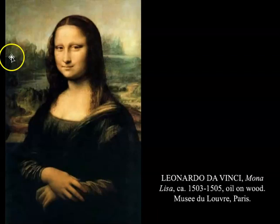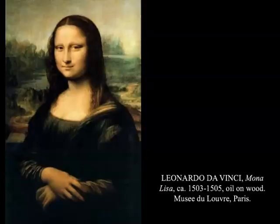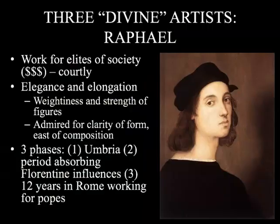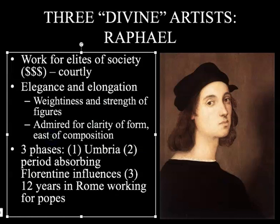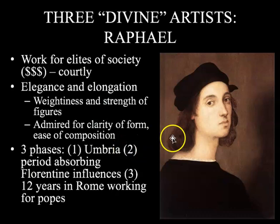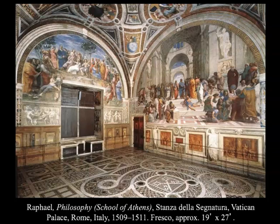Raphael is the second of the divine artists. He is well known for working with elites of society — being a courtly painter — with figures that have elegance and elongation, weightiness and strength, and is admired for his clarity of form and ease of composition. He worked in three phases: in Umbria, Florence, and then in Rome for popes. The well-known work we're focusing on today is his painting of the Stanza della Segnatura at the Vatican Palace.